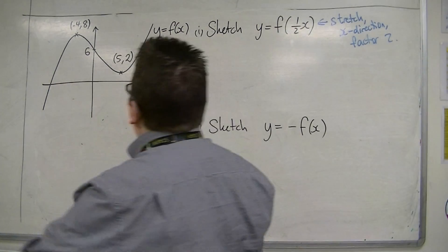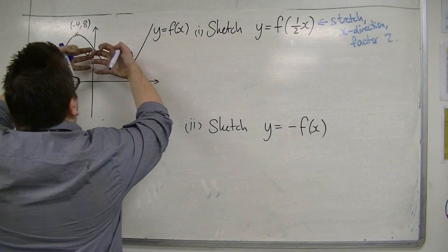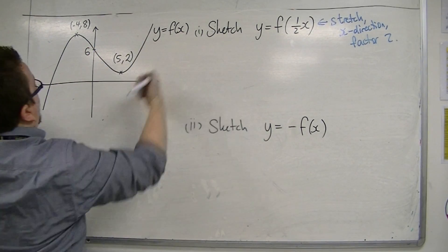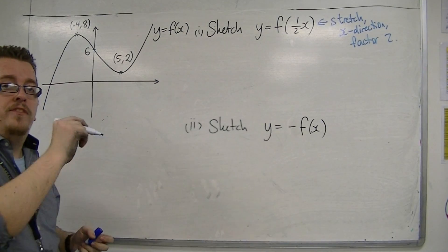So that must mean that if it's the x-direction factor 2, a stretch, then it pulls the graph outwards so that all of the x-coordinates of the curve double.